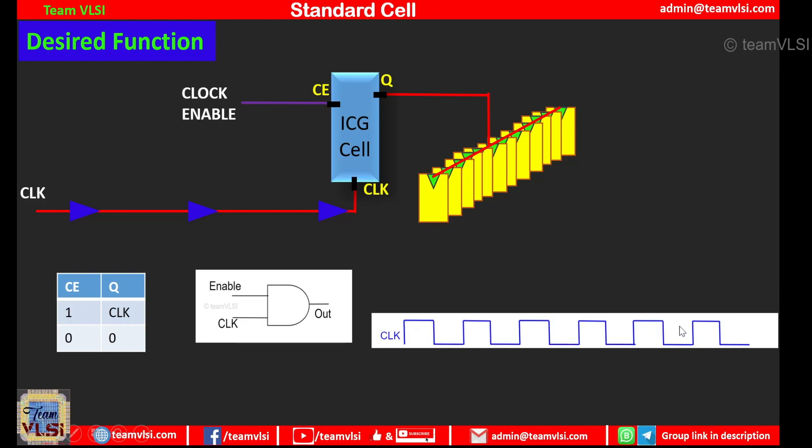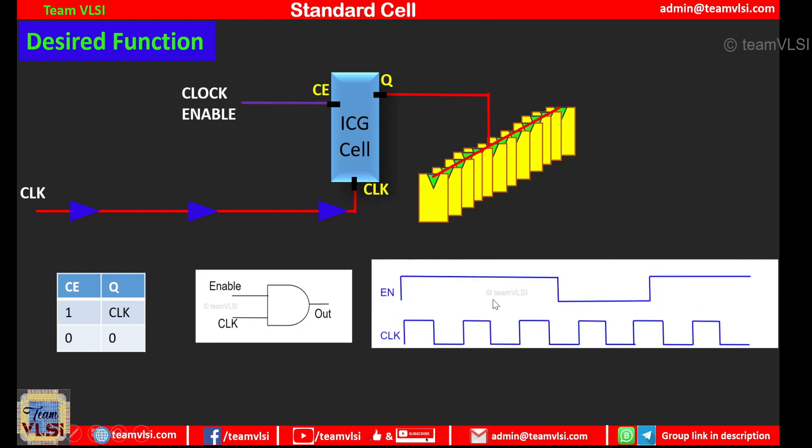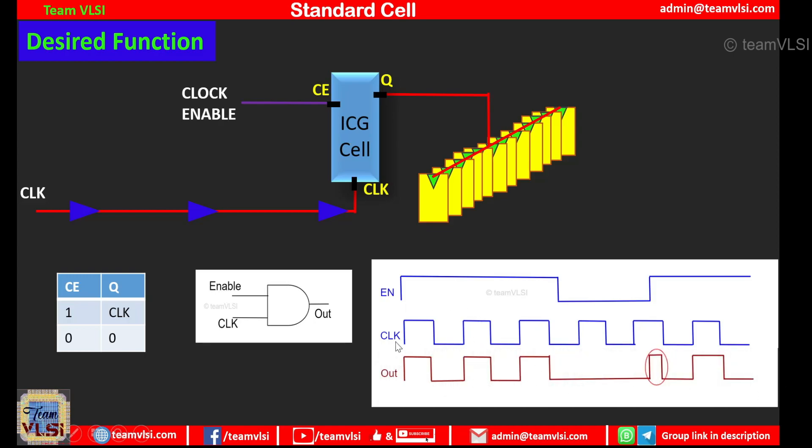So let's suppose this is our clock signal which is going to one of the input of the AND gate and this is the enable signal going to another input of the AND gate. So output would be like this. Wherever the enable signal is high it allows to pass the clock signal and wherever the enable signal is low it stops the clock signal. But in this area I have highlighted you can see here a glitch. So you will see the glitch whenever the enable signal is switching and clock signal is high. So in that case you will see this type of glitch.